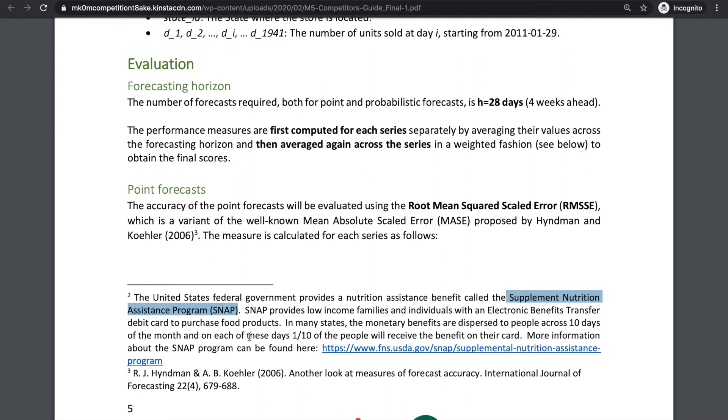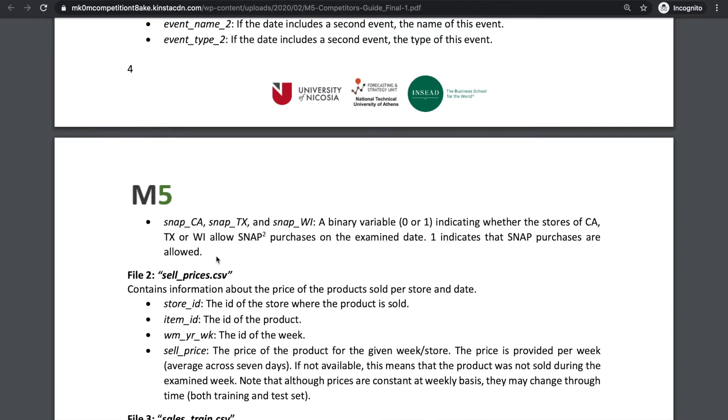which helps low-income families purchase food products. The monetary benefits are only dispersed on certain dates, and these binary features basically encode which date SNAP purchases are allowed. For example, if the value of SNAP-CA is 1 on a certain day, we can expect sales for certain food products in California to increase because of SNAP purchases.